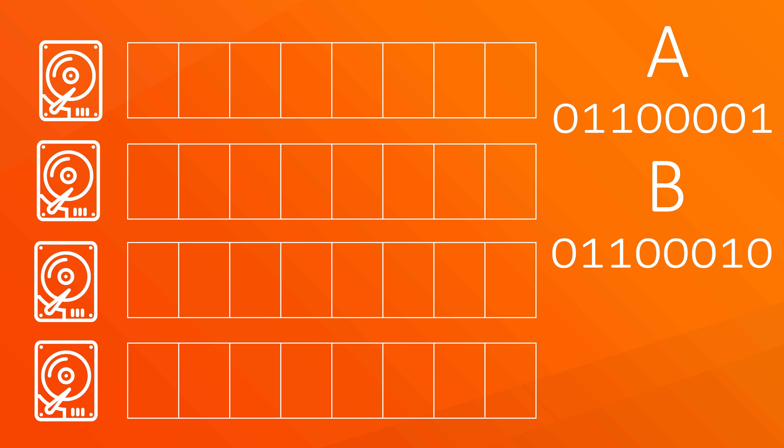Letter B would be 0, 1, 1, 0, 0, 0, 0, 1, 0. Letter C would be 0, 1, 1, 0, 0, 0, 0, 1, 1, and so on.